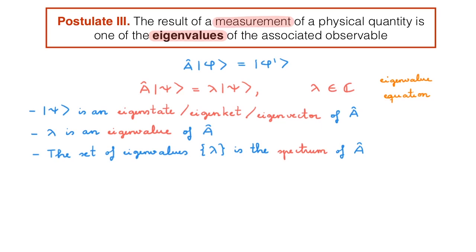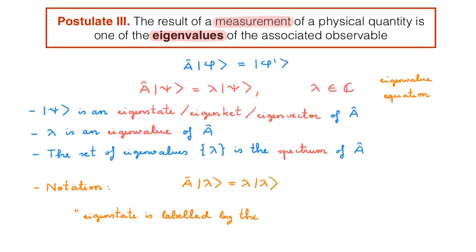Before moving on to learn more about eigenvalues and eigenstates, I want to say something about notation. The eigenvalue equation is very often written differently in quantum mechanics. Remember that the label of a ket has no intrinsic meaning — it simply allows us to identify the particular ket that we're talking about. When talking about eigenkets, it is very convenient to label them by their corresponding eigenvalue. The lambda here is the eigenvalue of A and the ket here is the corresponding eigenket. In the rest of the video I will use one form, but both forms are used very often in quantum mechanics.